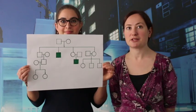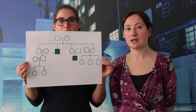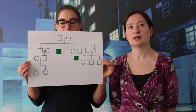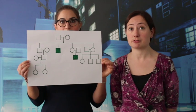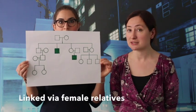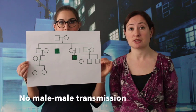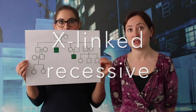Here's another pedigree. What differences do you see and what mode of inheritance do you think this is? Here you can see that only boys are affected. They are not present in every generation and they're all linked through a female relative, with no male-to-male transmission. This is X-linked recessive inheritance.